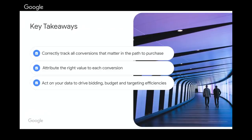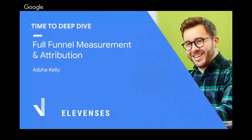Three main takeaways: first, correctly track all conversions that matter in your path to purchase — not only actions that impact your bottom line but also all micro conversions along the funnel. Second, attribute the right value to each conversion by switching to a non-last-click attribution model, ideally data-driven. And third, act on this data to drive bidding, budget, and targeting efficiencies. That's all from us for this week's episode of Elevances on full funnel measurement. See you next week.